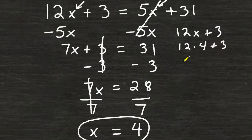12 times 4 is 48. And if we add 48 to 3, that would give us a total of 51.